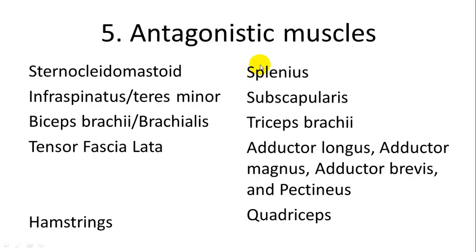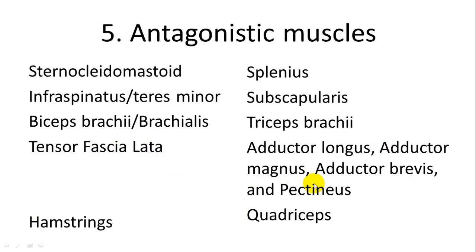Just to point out some of the antagonistic muscles: we have the sternocleidomastoid and the splenius, the biceps brachii and triceps brachii, the tensor fasciae latae and the adductor muscles, and the hamstrings and the quadriceps. They are generally on opposite sides of each other. And that's it for our brief survey through the muscles.